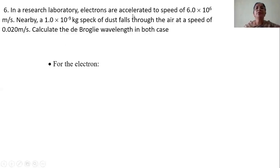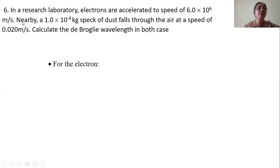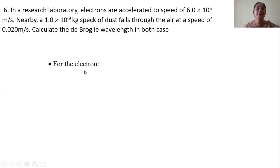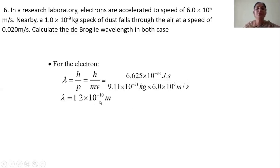One more problem. In a research laboratory, electrons are accelerated to a speed of 1.6 into 10 power 6 meters per second. Near the laboratory, 1.0 into 10 power minus 9 kg of dust falls through the air at a speed of 0.020 meter per second. You are asked to find the wavelength for the electrons accelerated in the laboratory and for the dust particle. For the electron, lambda equals h by mv. Mass of the electron is known, and velocity is given. Substituting, you get the answer: 1.2 into 10 power minus 10 meter.